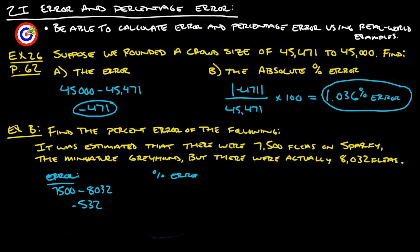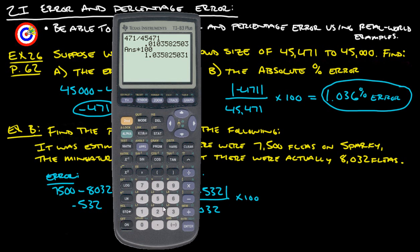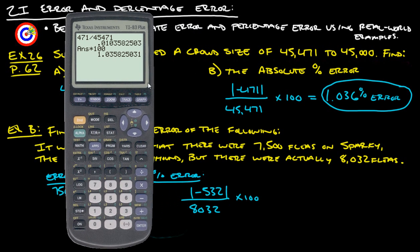The percent error would then be the absolute value of negative 532 divided by our actual amount, which is 8032, multiplied by 100. Let's calculate that out.